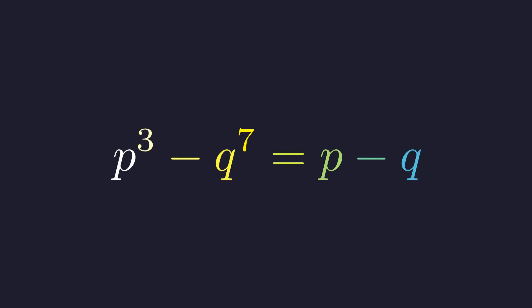We need to find all prime numbers p and q that satisfy the equation p cubed minus q to the 7th equals p minus q. This is a problem in Diophantine analysis, specifically concerning prime solutions.